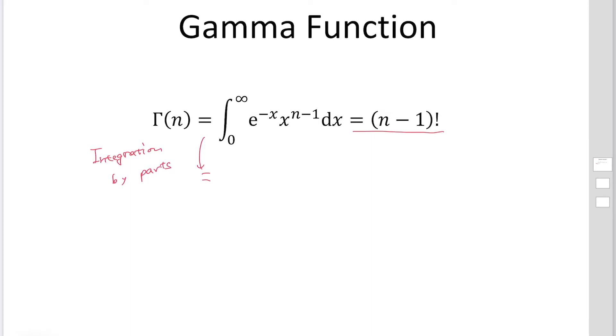Then it becomes minus exponential minus x, x to the n-1, from 0 to infinity, plus n-1 times the integral from 0 to infinity of exponential minus x, x to the n-2, dx.